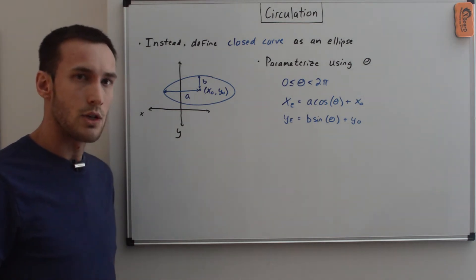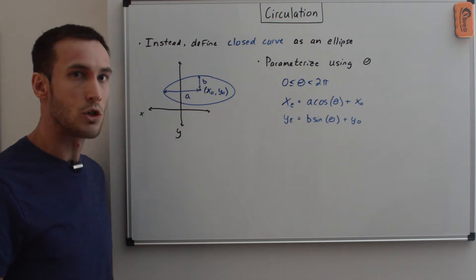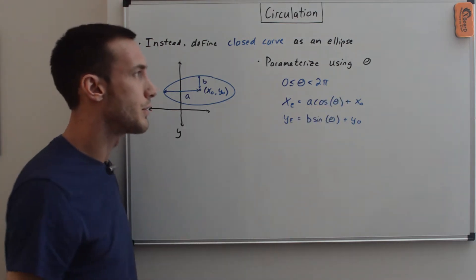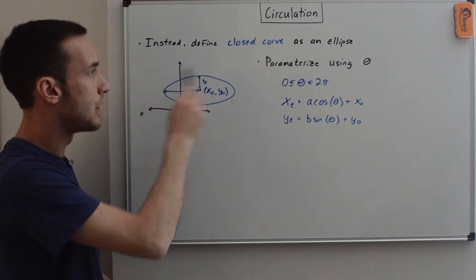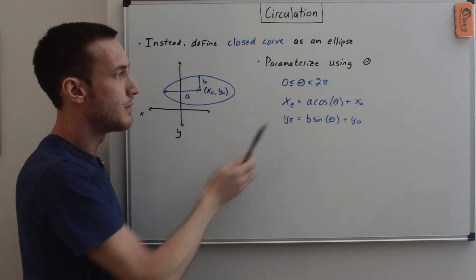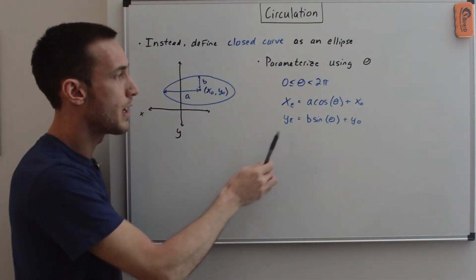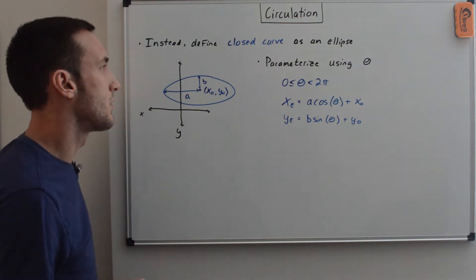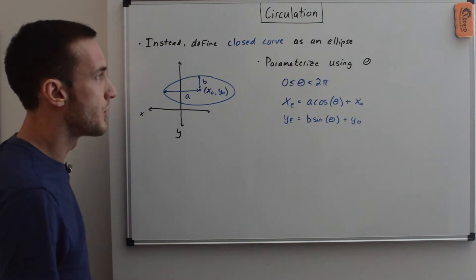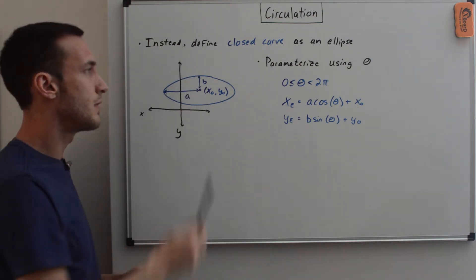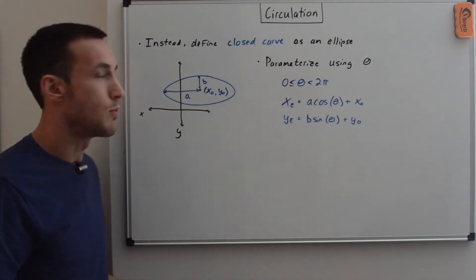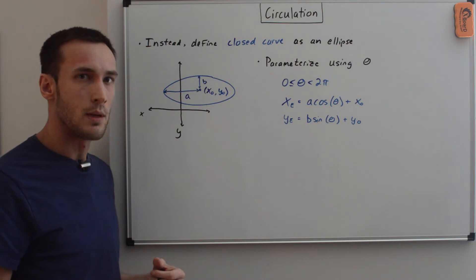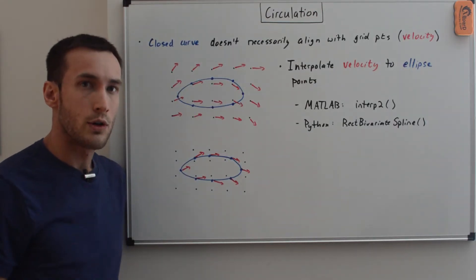We don't refer to major or minor axes because if b is greater than a, the vertical axis is the major axis. To get the xy coordinates of every point on the ellipse, we parameterize using angle theta from 0 to 2π. The ellipse points are: x_e = a·cos(theta) + x-naught and y_e = b·sin(theta) + y-naught. This approach makes it easy to use any number of points — for example, 4 points at 0°, 90°, 180°, 270°, or a thousand points by dividing theta into a thousand steps.